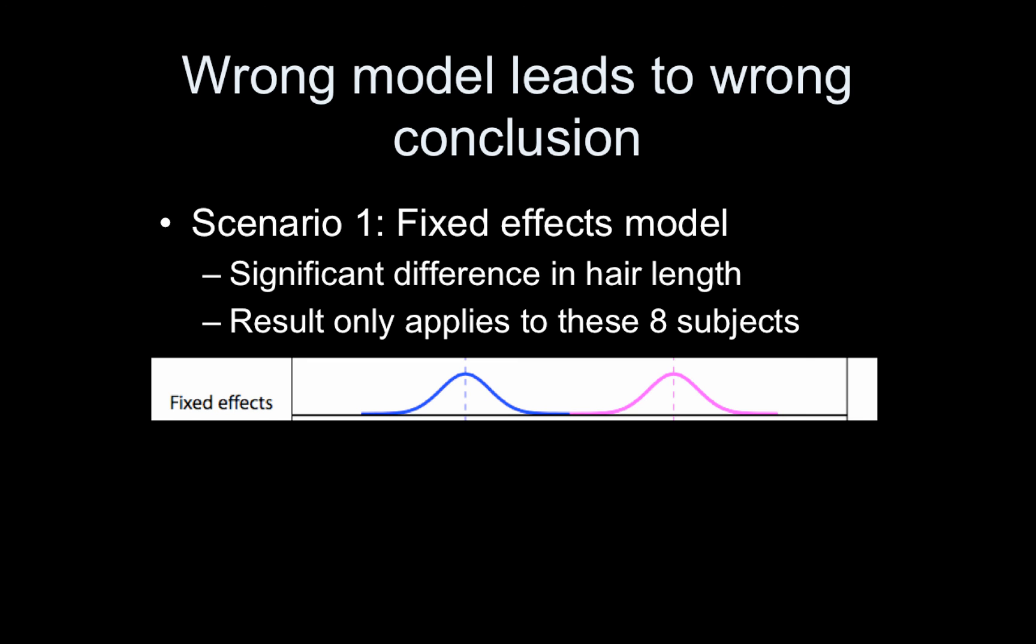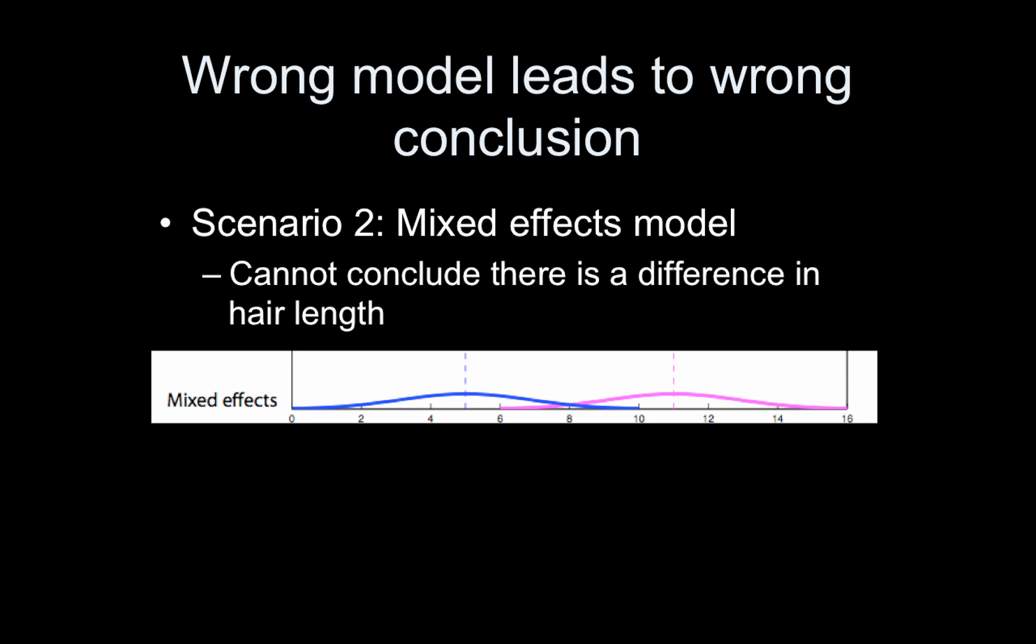So the wrong model can lead to the wrong conclusion. In the first scenario, the fixed effects model, we came to the conclusion that there was a significant difference in hair length. But this conclusion is fine. It's just you have to apply it properly. This result only applies to these eight subjects. In the second scenario, using the mixed effects model, we cannot conclude there's a difference in hair length. But this conclusion applies to the population of males and females.